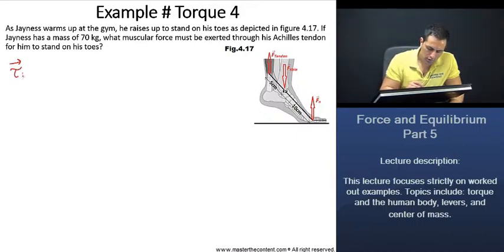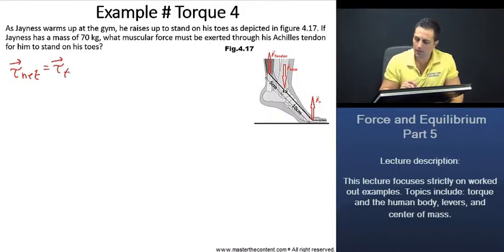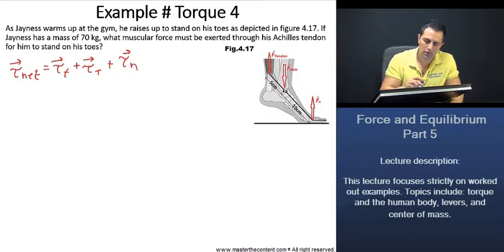We end up with the following. We're going to have three torques. We'll write this with the subscript small cap T for tibia plus the big one here for the tendon plus the one with regards to the normal force. This here is going to be zero.